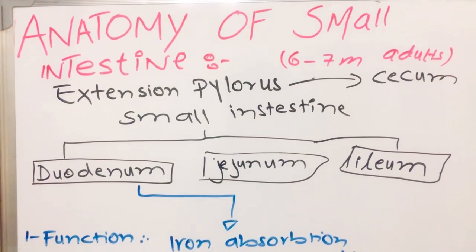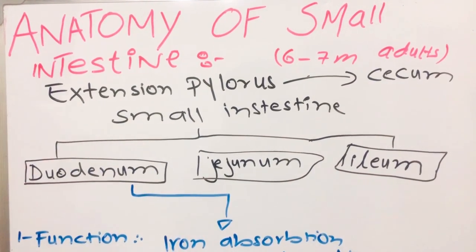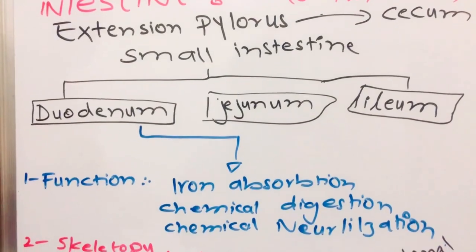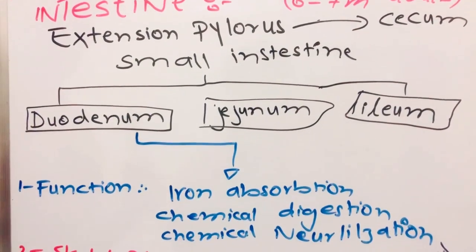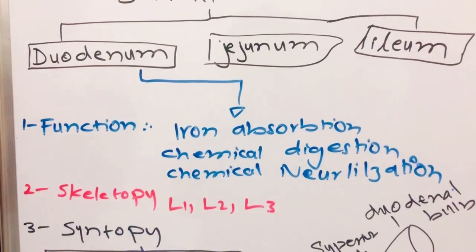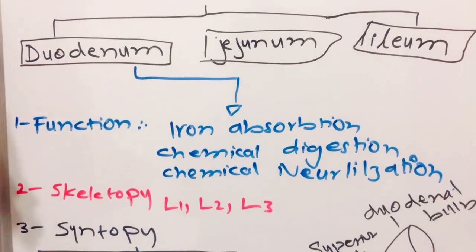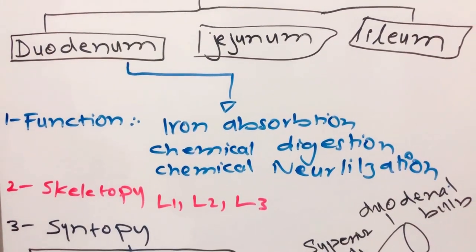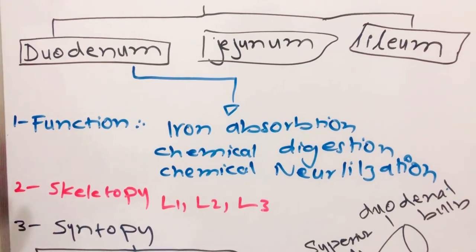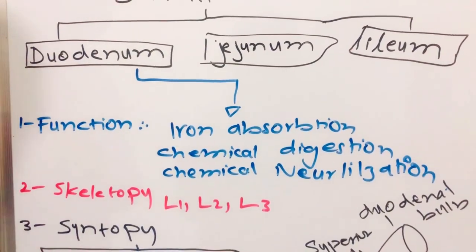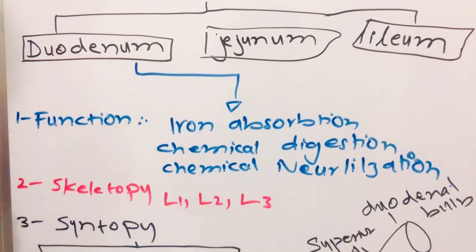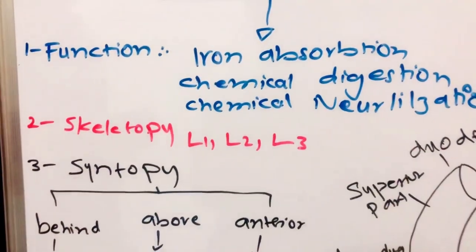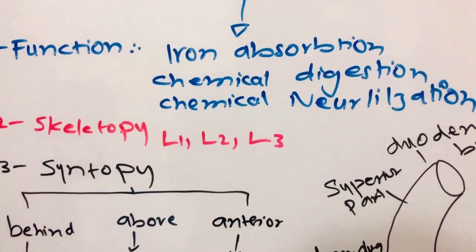First we will talk about the duodenum. The duodenum has functions of absorption of iron and chemical digestion. When the chyme comes from the pylorus, it mixes with HCl and enters the duodenum, where absorption of iron begins, chemical digestion occurs, and neutralization of some chemicals also occurs.